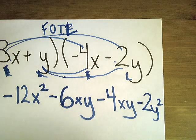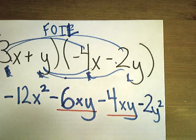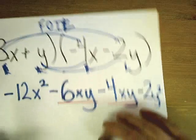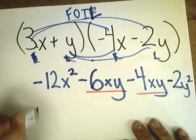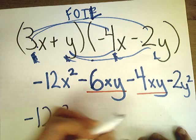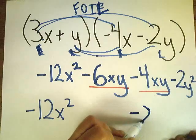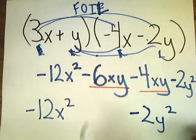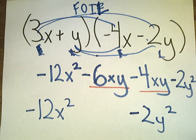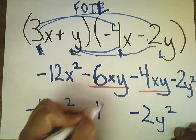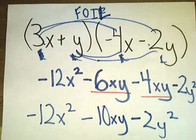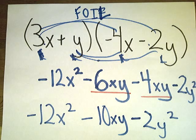Now I look to see if I have any like terms. There's some. So I'm going to bring down anything that's not being used, so bring down negative 12x squared. I'm also going to bring down minus 2y squared. And I'll combine these two into the middle: negative 6 minus 4 is negative 10xy. So that's how you solve it if you have different letters.